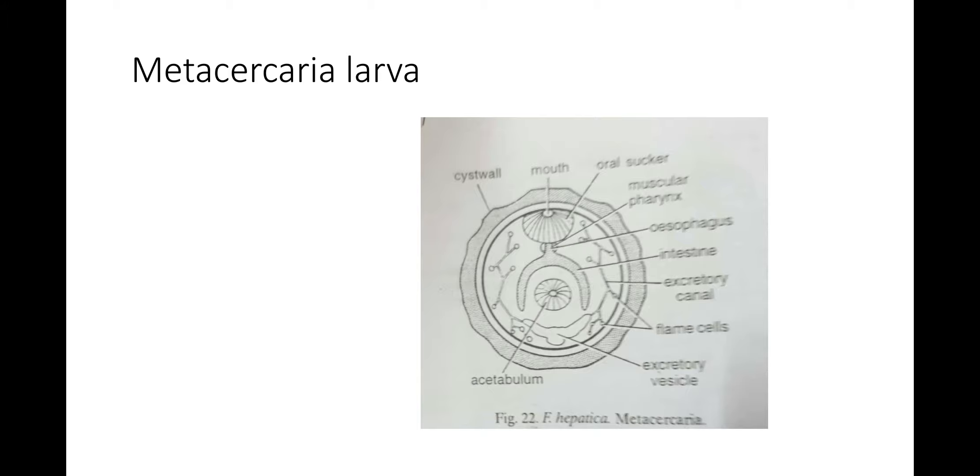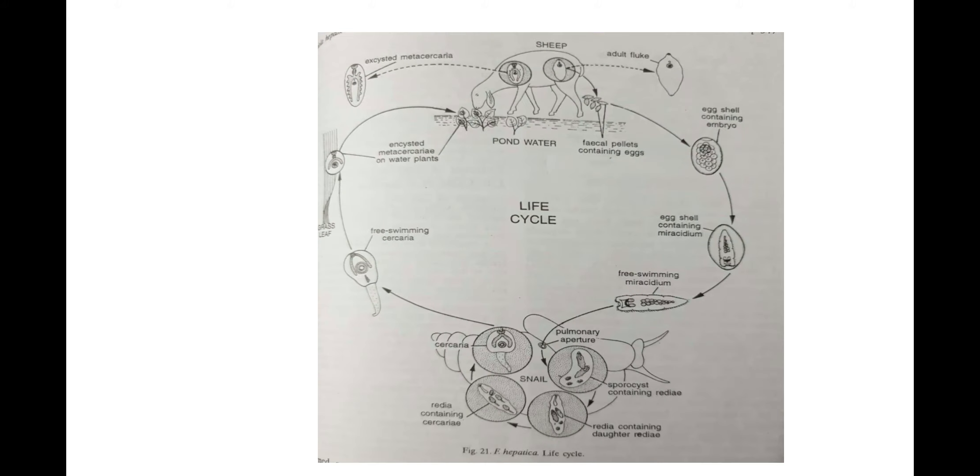Metacercaria develops into adult fluke only inside its definitive host or sheep. The latter gets infection by grazing on leaves and grass blades to which the cysts are attached. Metacercaria survives action of host's gastric juice as its cyst is insoluble in it. Cyst wall finally dissolves in proximal part of intestine and liberates the larva. It penetrates the intestinal wall and gets into coelomic cavity where it infects the liver, feeds on its tissue and grows in size in 5-6 weeks. It then takes up its position in the bile duct where it finally attains sexual maturity. In 11-13 weeks after entering the body of host, it starts laying eggs. This diagram is showing the life cycle of Fasciola hepatica.